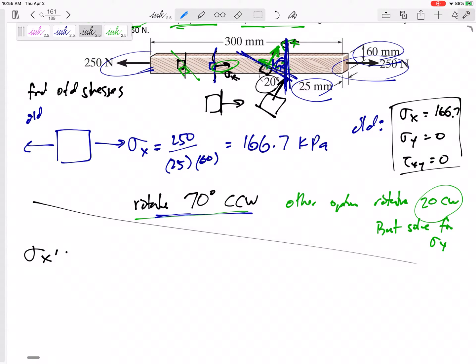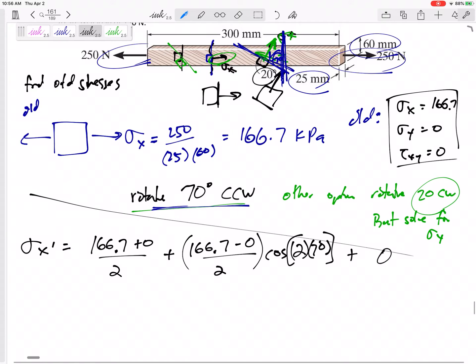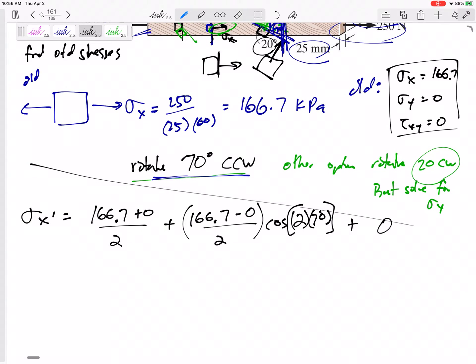Alright, so now I'm ready for my new sigma X. I'm not going to rewrite this whole formula. The formula is sigma X plus sigma Y divided by 2, plus sigma X minus sigma Y divided by 2 cosine 2 theta, plus tau XY sine 2 theta. So this would be positive 166.7 plus 0 divided by 2 because sigma Y is 0, plus this would be 166.7 minus that sigma Y divided by 2, cosine of 2 times 70, so cosine of 140, plus this last term is tau XY sine 2 theta.